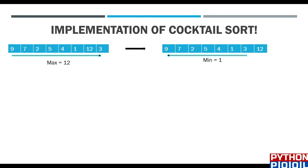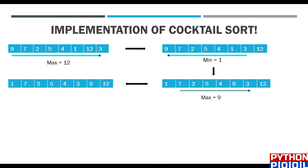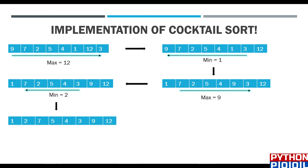My remaining list is [9, 7, 2, 3]. In the backward part, the minimum element is 1, so I swap 1 and 9 to place it at the leftmost part. Once again on the forward path, the remaining list is [7, 2, 3] — maximum element is 9, so I swap 9 and 3. Now my list becomes [3, 2, 7], and the minimum element found is 2, so I swap 2 and 7.